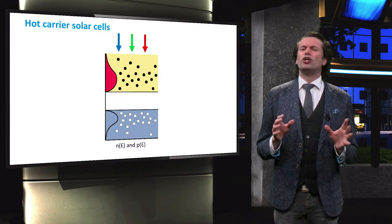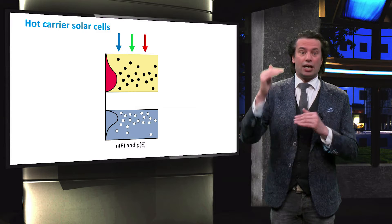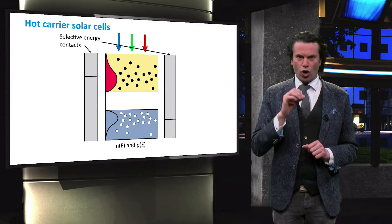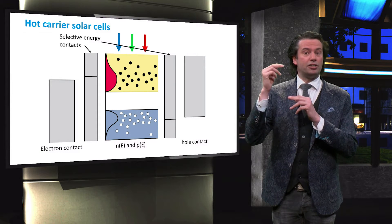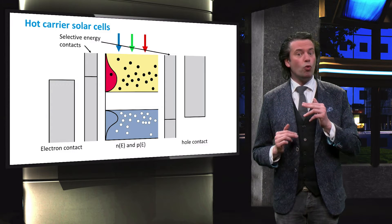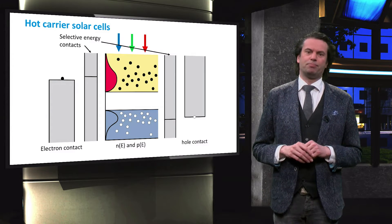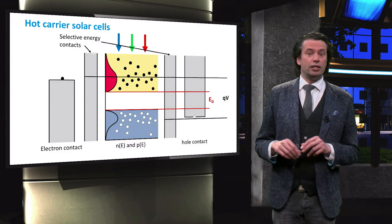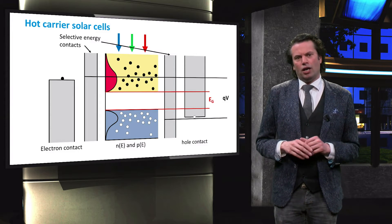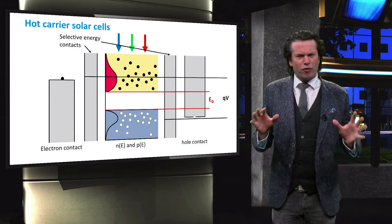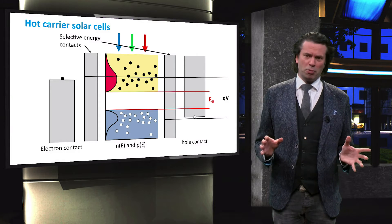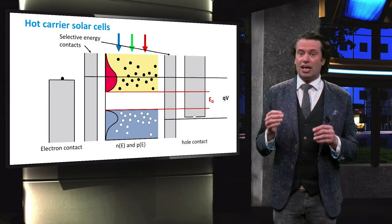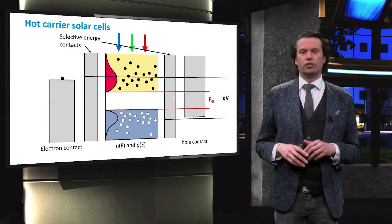The idea of hot carrier cells is to collect the charge carriers as long as they are still hot. Hot carrier solar cells require selective contacts, which only collect electrons above a particular energy level in the conduction band and holes below a certain energy level in the valence band. As such, a larger energy can be utilized per excited charge carrier, as indicated by the Q times V. The average energy of the collected charge carriers would therefore exceed the bandgap energy. At the moment, the main challenge is to increase the lifetime of the hot charge carriers such that they have the time to move from the absorber material to the selective contacts.